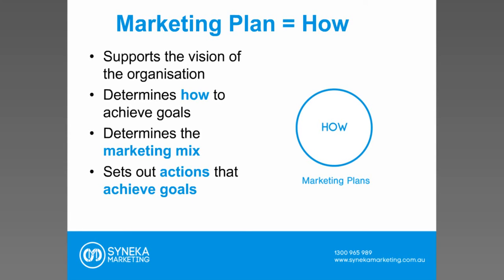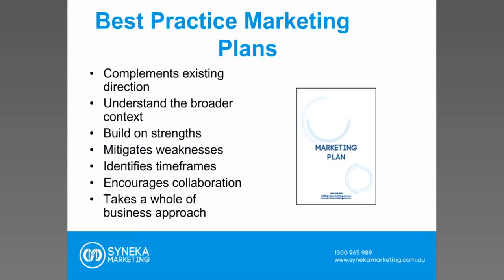The marketing plan looks at components like the marketing mix — the mix of your products, your services, pricing, the people that you want to reach, the tools available to reach those stakeholders — and it sets out actions that achieve those goals. Marketing should be quite measurable in terms of what you want to identify, and it should look at the actual actions you can use to achieve those goals.